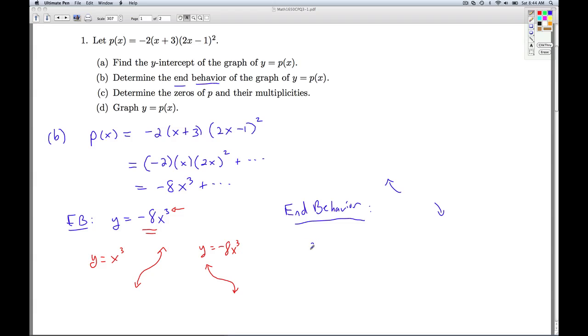The way we write that is as X goes to negative infinity, P of X goes to infinity. And as X goes to infinity, P of X goes to negative infinity. So that's the end behavior.